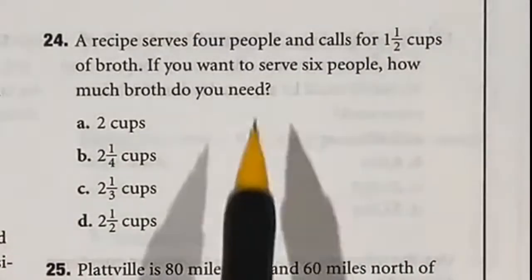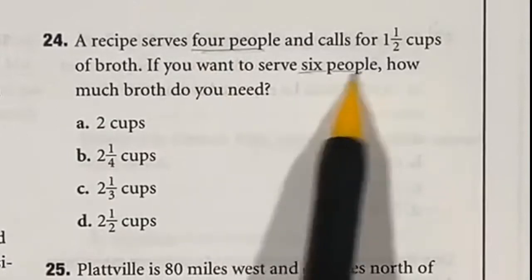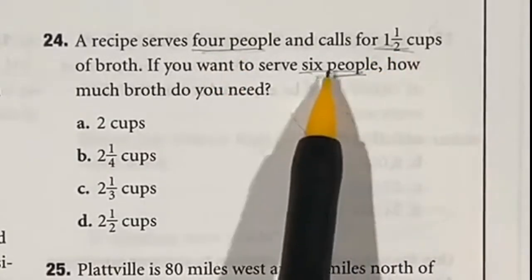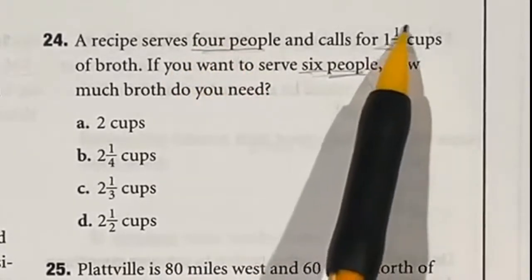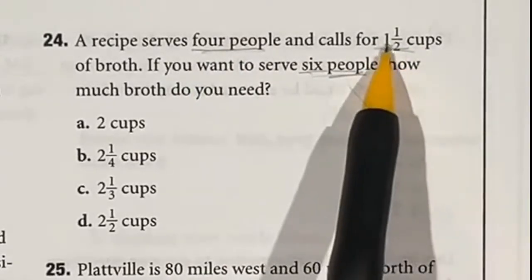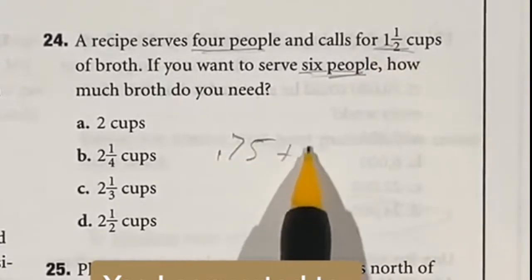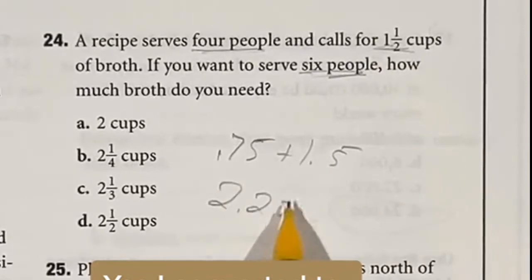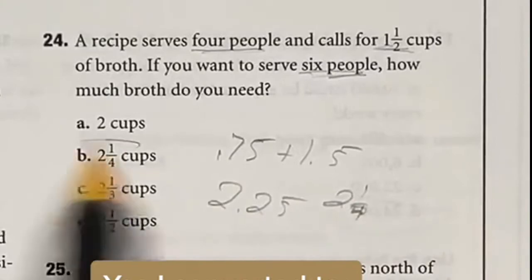The recipe currently serves 4 people, but we need to know how much broth would be needed for 6 people. For 4 people it's 1.5. For 6 people, that's those 4 plus another half, since we need 2 more. So I just need to find half of 1.5, which is 0.75, and add it back to the 1.5 we already have. That gives us 2.25, also known as 2 and 1 fourth, which is answer B.